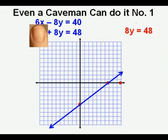Now he covers the x term. He gets 8y = 48. He solves for the y-intercept by dividing both sides by 8, so y = 6. He marks the y-intercept of 6 on the y-axis. He draws the second line through the two points.